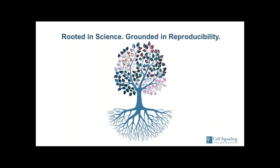Third question: what is the advantage of Alexa Fluor dyes over others? Immunofluorescence started back in the 1940s, and over time people characterized a number of fluorophores that they liked to use, but there were some challenges associated with them. Alexa Fluors were invented in 1999, purposefully to address some of these issues. They are brighter than some of the earlier fluorophores, more photostable, and easier to conjugate. With that being said, I've successfully used a number of the older fluorophores in my experiments, and those will work as well — it's just a matter of what works best for the system you're working with.